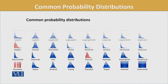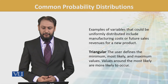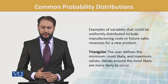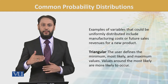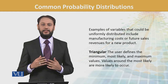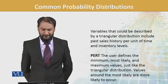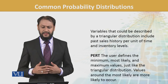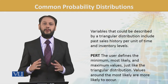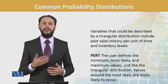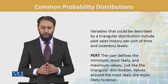Triangular — ab yeh table mein jaake triangular dekhen. In triangular, user defines minimum, most likely, and maximum values. Values around the most likely are more likely to occur — jo bottom base hai woh higher hai. Yeh kahan zyada use hoti hai? Past sales history per unit of time and inventory levels — kyunki inventory levels mein bahut zyada change nahin aati.